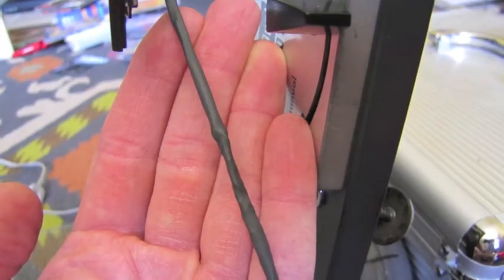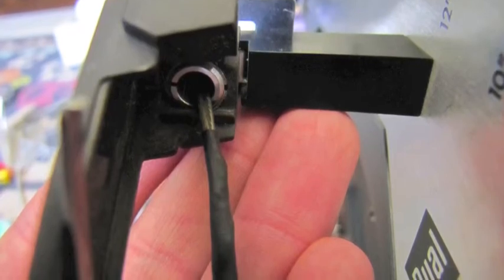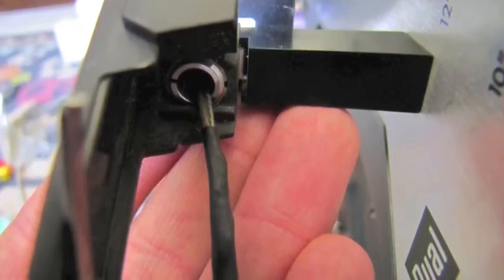This is the heat shrink tubing after it was heated. Begin to feed the bundle of old and new tonearm wires through the tonearm.